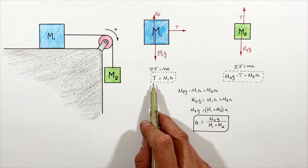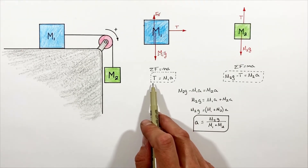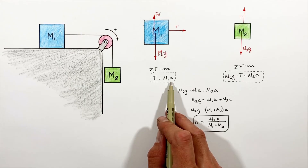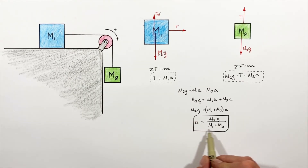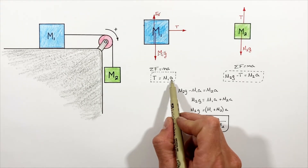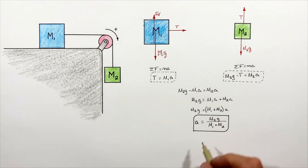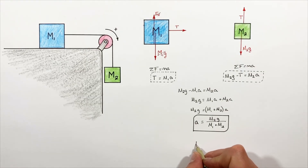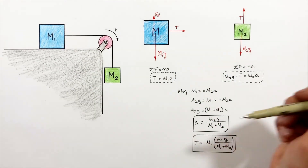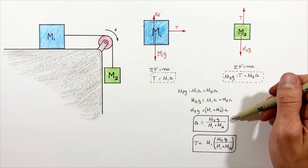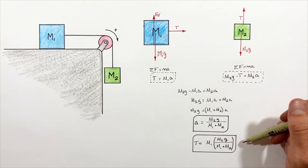We also need to solve for the tension in the string. We have a convenient equation for tension as a function of acceleration, so we plug our acceleration formula into that equation to get an expression for the tension in the string.